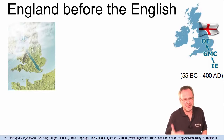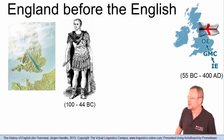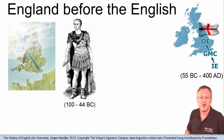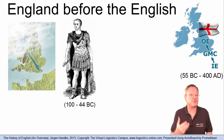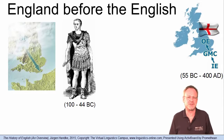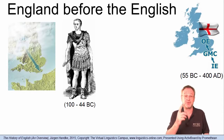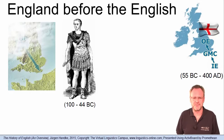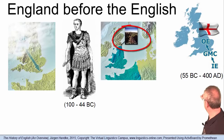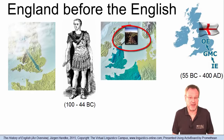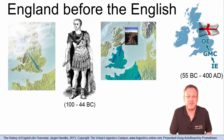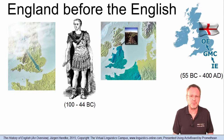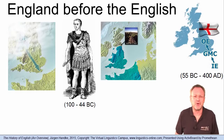Beginning in 55 before Christ, Julius Caesar, the Roman Emperor, made several attempts to invade Britain. But it was not before 50 after Christ that most of the land was under Roman domination, except for the northern part, which remained unconquered. Hadrian's Wall represents the borderline. England became Rome's westernmost outpost and was gradually Romanized.